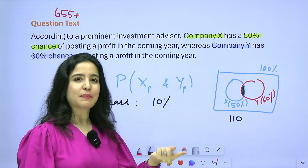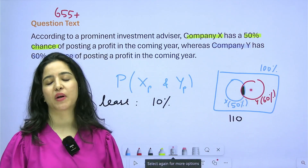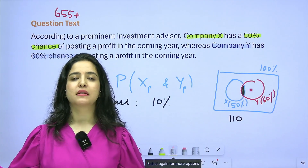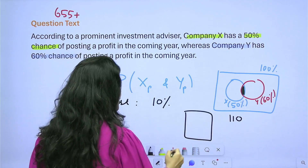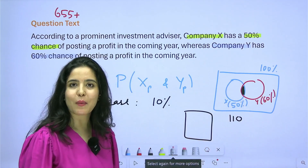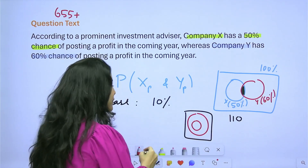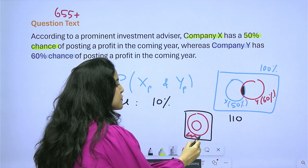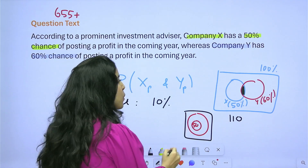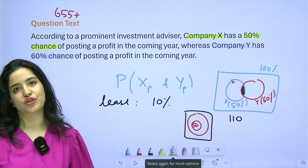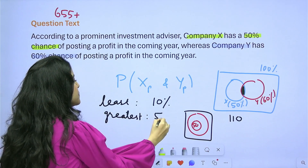For the greatest overlap, I want maximum overlap — one circle fitting entirely inside the other. The smaller circle, Company X at 50%, can fit completely inside Company Y at 60%. In that case, the overlap equals the full 50% of Company X, with the remaining 40% of Y outside. So the greatest possible probability that both post a profit is 50%.